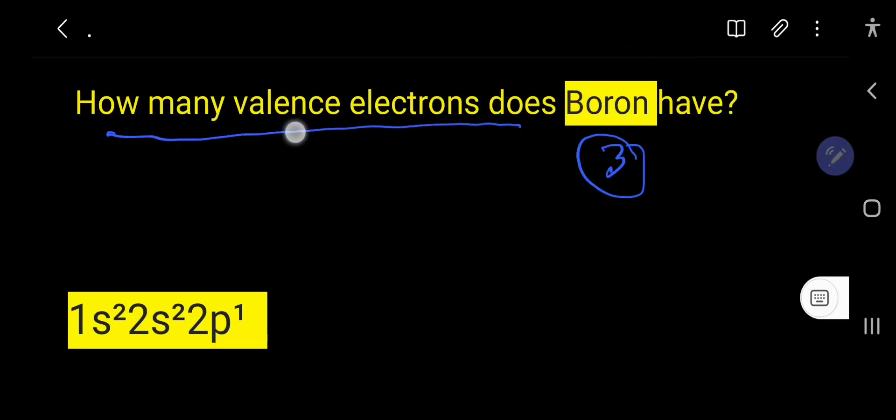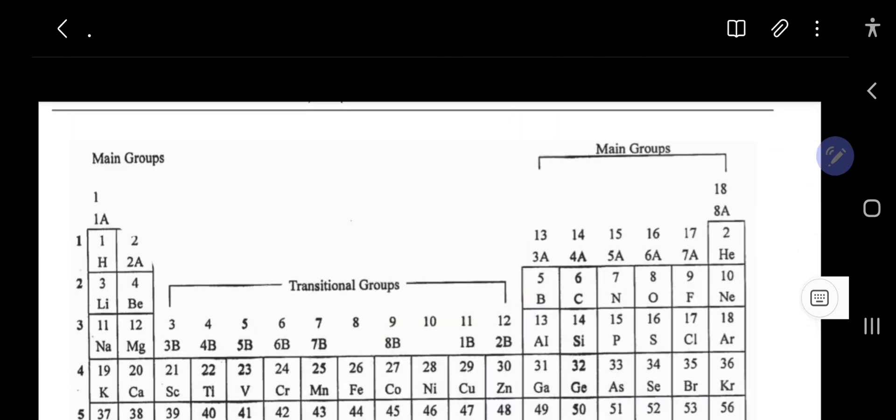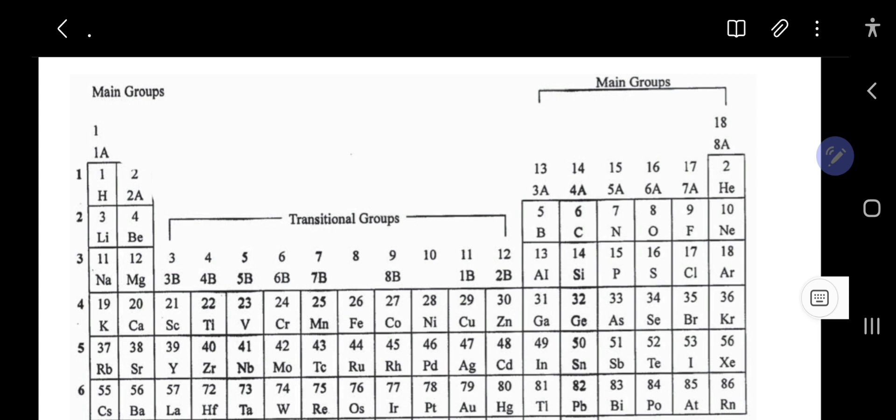How many valence electrons does the element boron have? Boron has three valence electrons. I will show you two methods to find out the valence electrons in boron. Let me show you the first method using